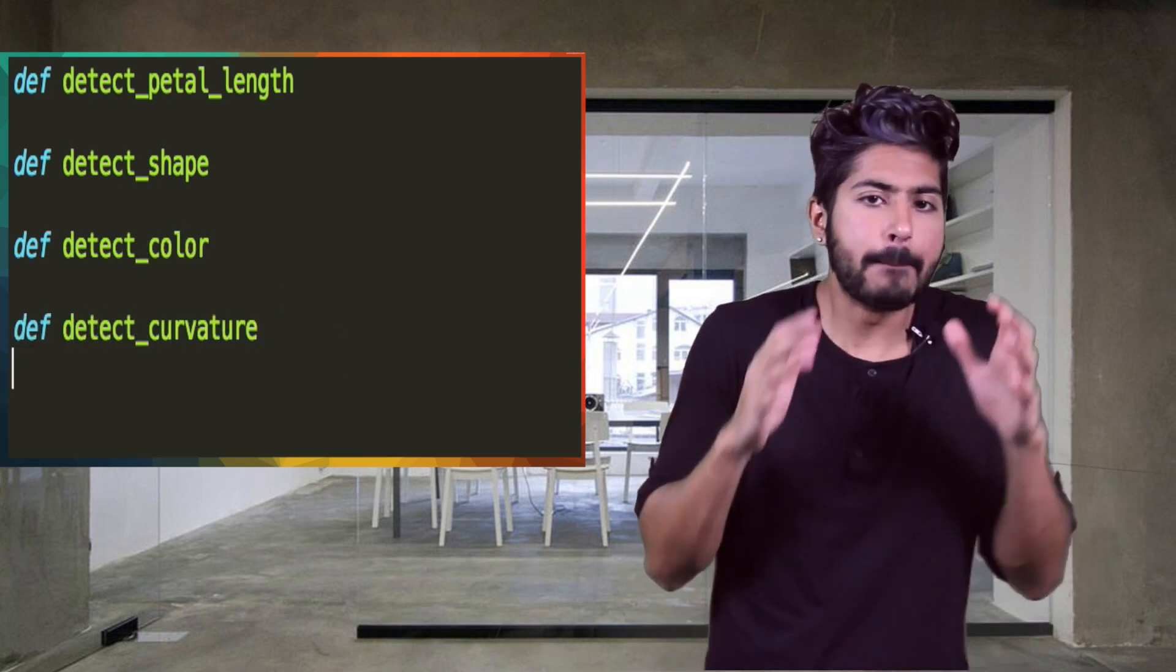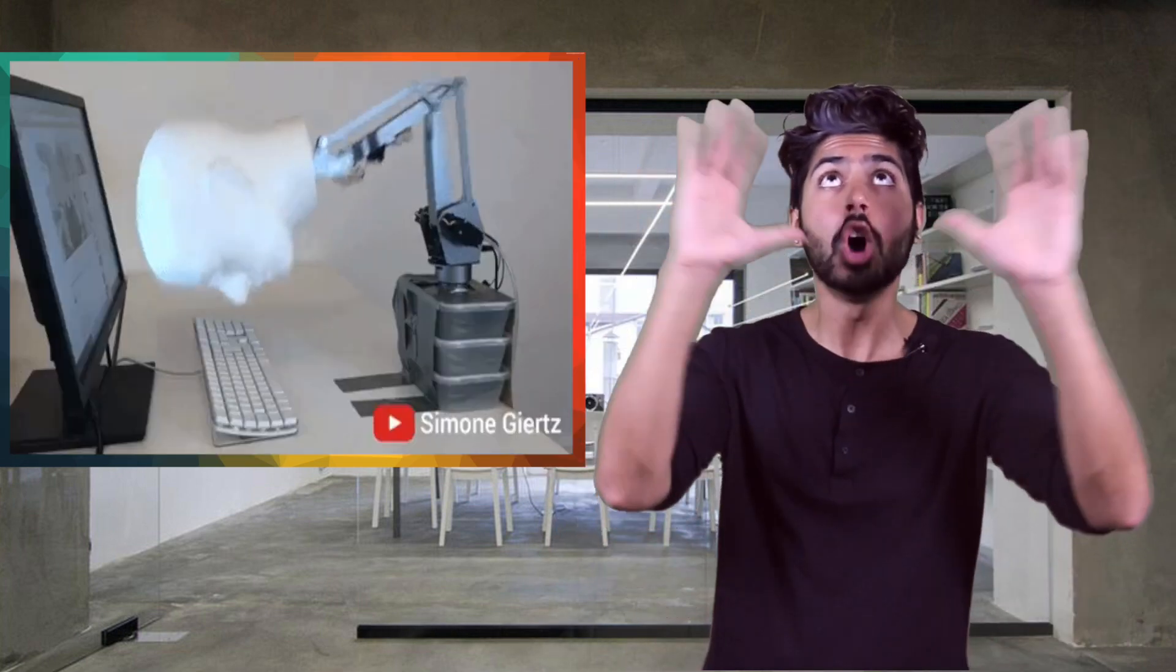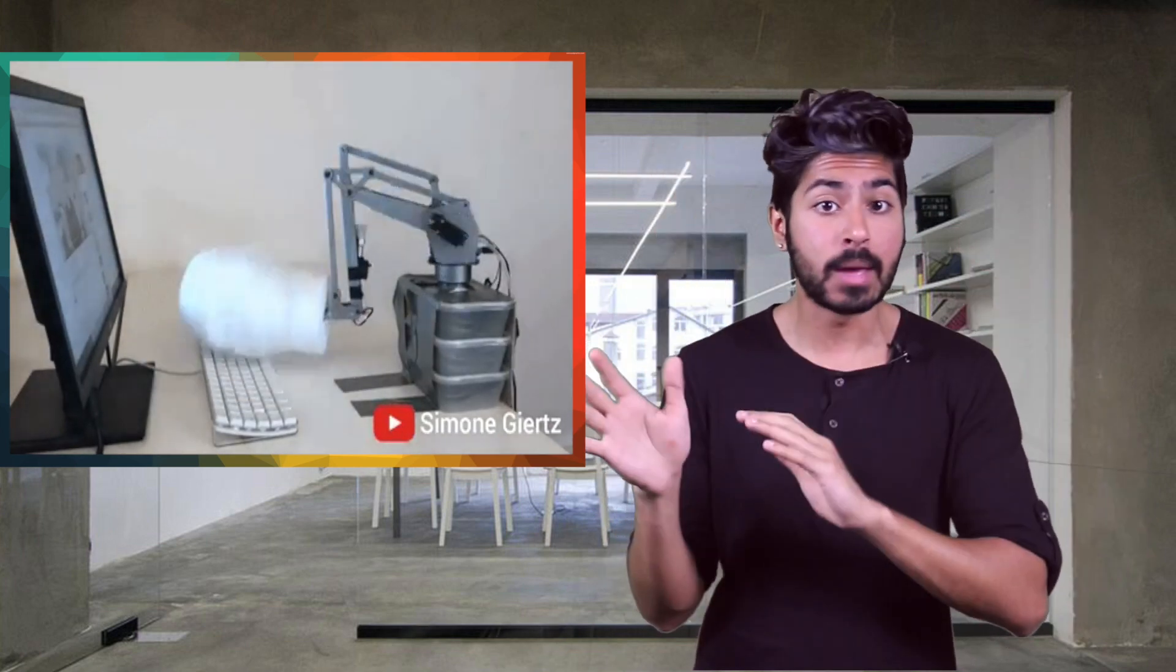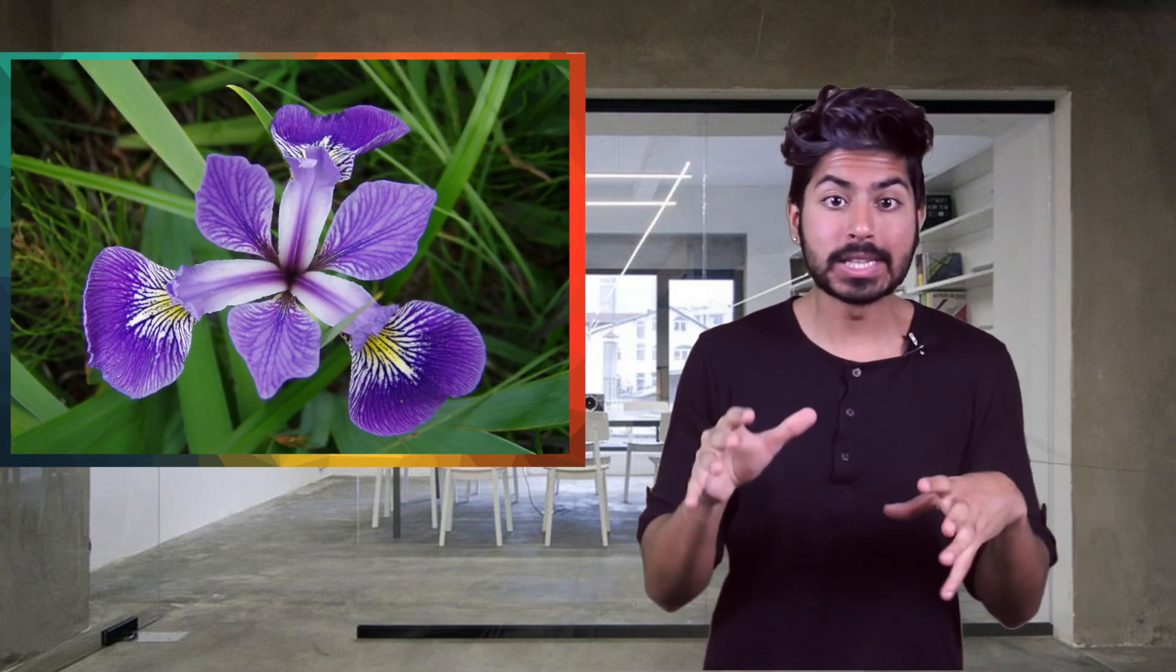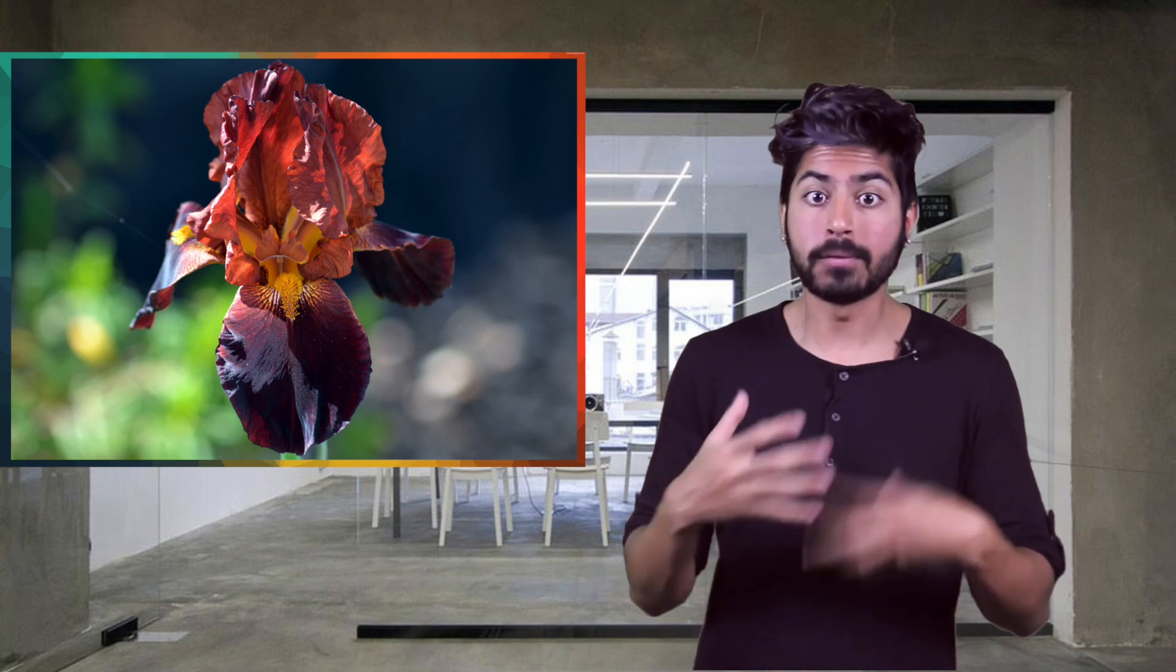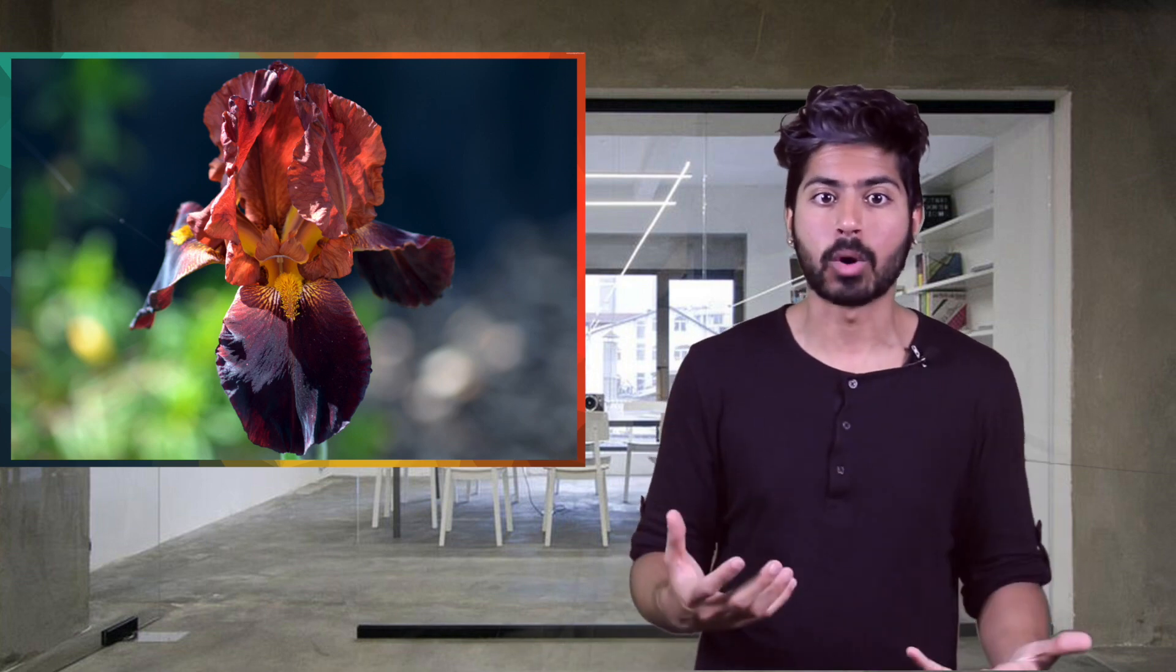The problem is, there are a bunch of corner cases and there's no way you can account for all of them ahead of time. Like what if one of the leaves is partially obstructed? Or a flower is a certain color that you didn't account for? Or the shape is totally different than what you expected? You can't just code all that up beforehand.